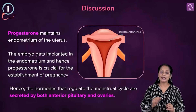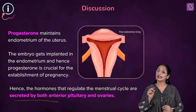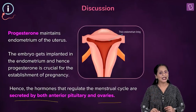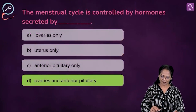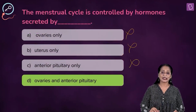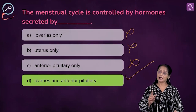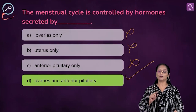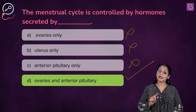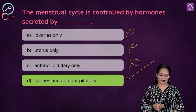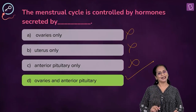So, the hormones that regulate the menstrual cycle are secreted by both the anterior pituitary gland and the ovaries. From the options, you can eliminate A, B, and C and arrive at D. D is the right answer. We can't select A because A says ovaries only, and C says anterior pituitary only. Uterus is out of the question. The correct answer is D.